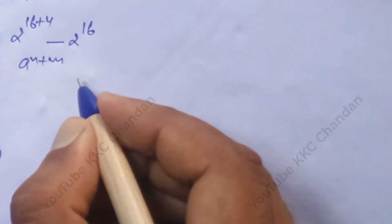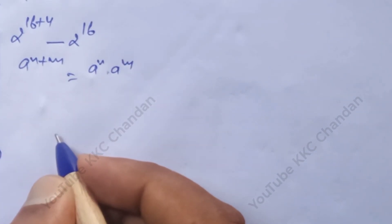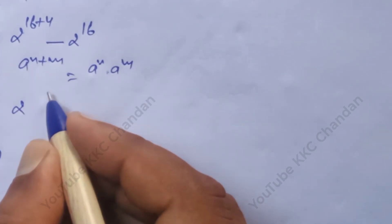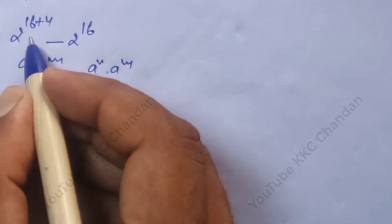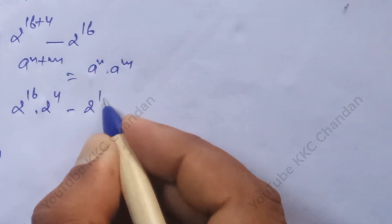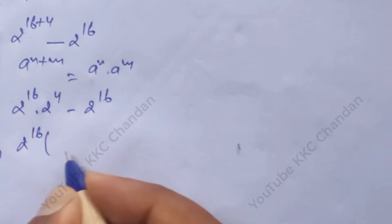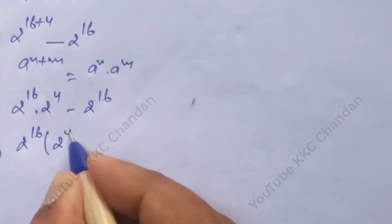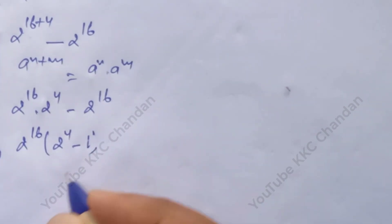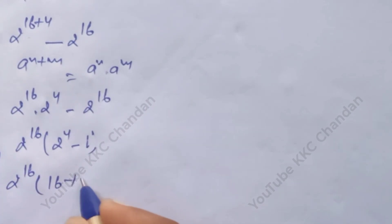2 power 20 can be written as 2 power 16 plus 4, minus 2 power 16. We know that a power n plus m equals a power n into a power m. Applying this rule: 2 power 16 into 2 power 4 minus 2 power 16. Taking 2 power 16 common: 2 power 16 bracket open 2 power 4 minus 1 bracket close.